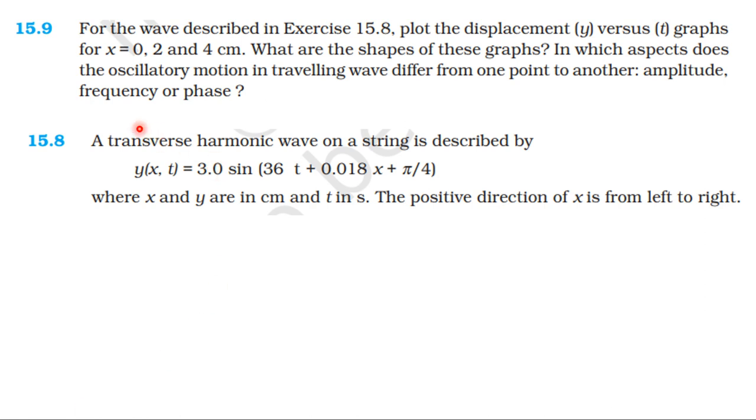From NCERT textbook, from the topic waves, let us solve exercise 15.9. For the wave described in exercise 15.8, plot the displacement y versus time graph for x equal to 0, x equal to 2, and x equal to 4 cm. What are the shapes of these graphs? In which aspects does the oscillatory motion in travelling wave differ from one point to another?